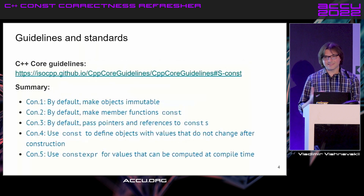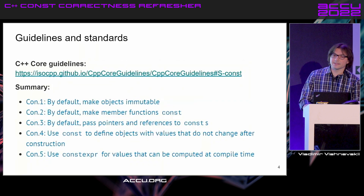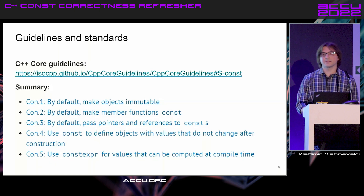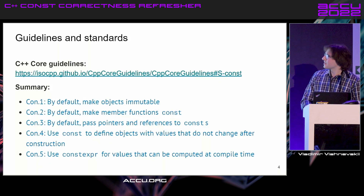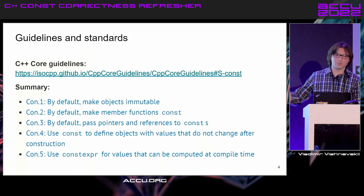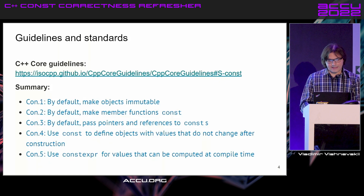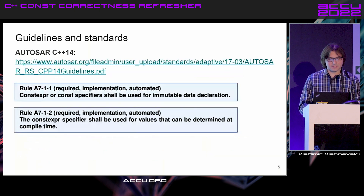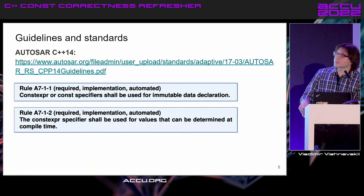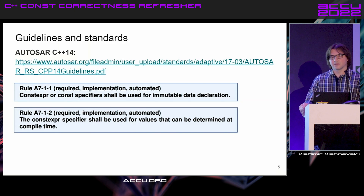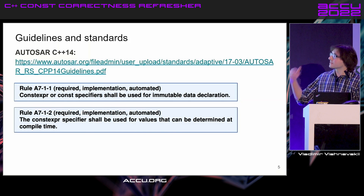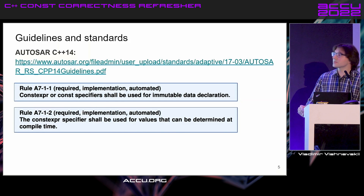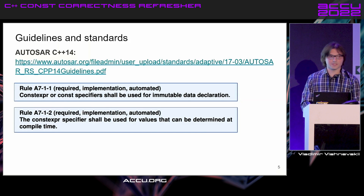This importance is reflected in guidelines and standards. Looking at the C++ Core Guidelines, there are many items about immutability and constness — the general recommendation being to make objects immutable by default, applying constness whenever possible. For safety-critical systems like automotive, this is already mandated: AutoSar C++14 states that immutable data should be declared with const or constexpr if possible.